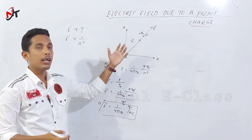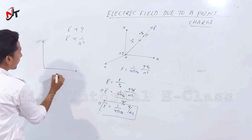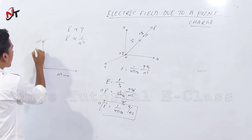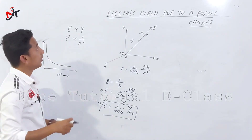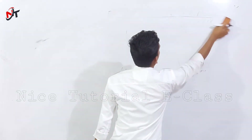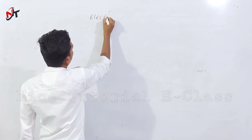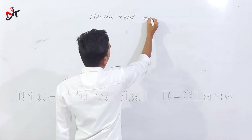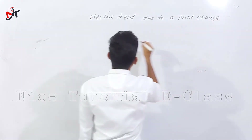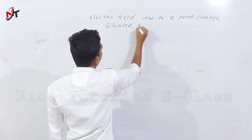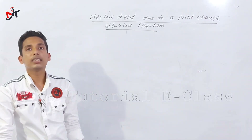If we increase the distance, the electric field intensity will decrease. If we plot the graph of E versus R², it will show a decreasing curve. Electric field due to a point charge situated elsewhere.